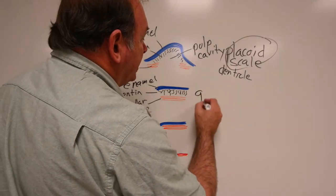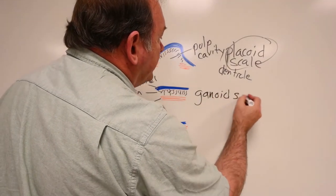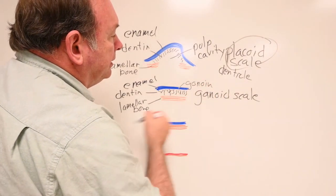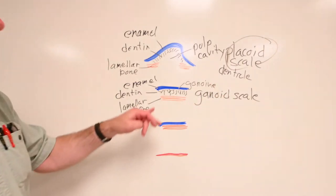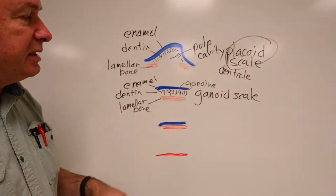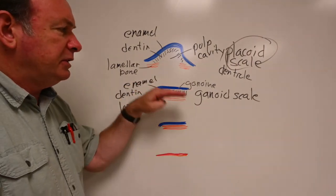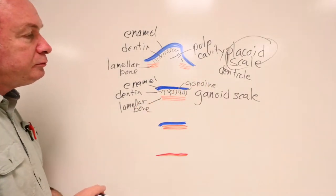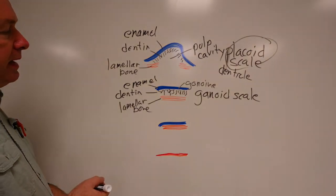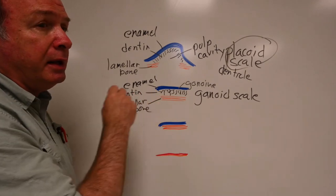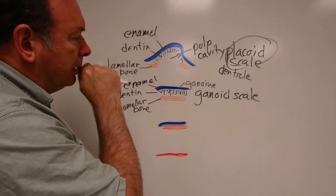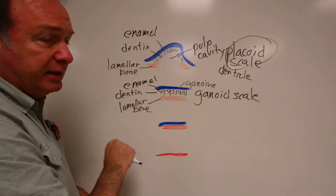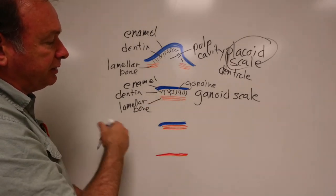In both the coelacanth and the polypterate fish, we have this next scale type that has enamel and dentin and lamellar bone. But it's more of a sandwich type thing, doesn't stick up like a tooth like it does on the shark. This is referred to as a ganoid scale. That material on the top is referred to as ganoin. It's a special variation of enamel. They say that dentin layer is reduced in the coelacanth.